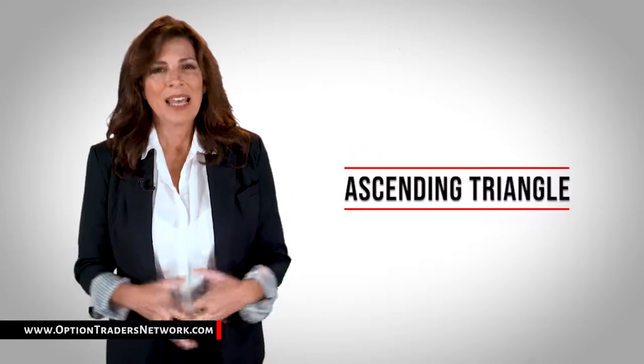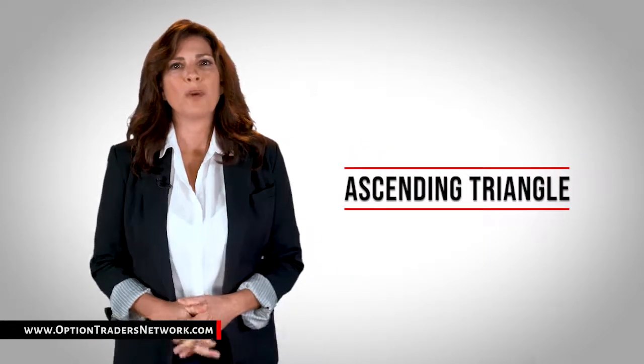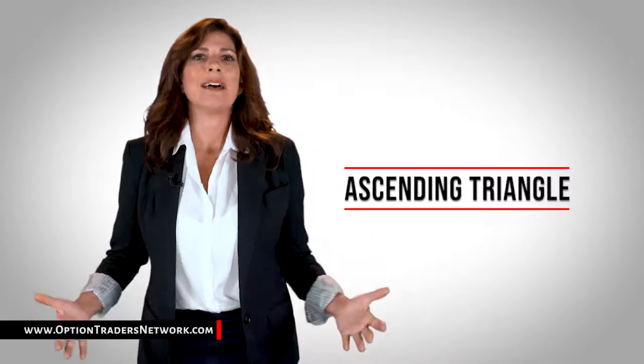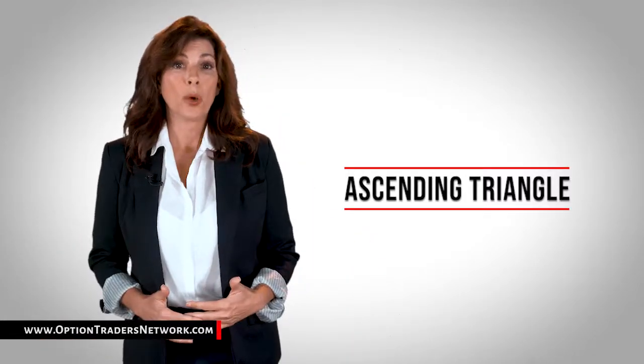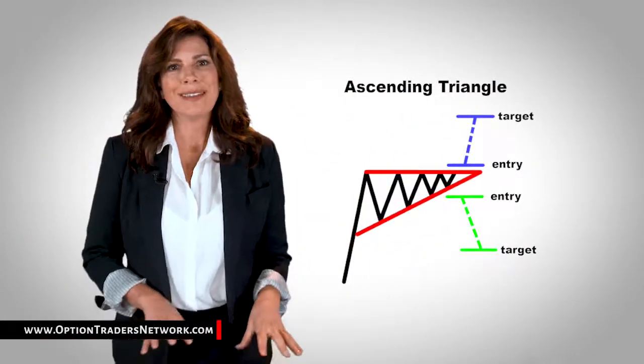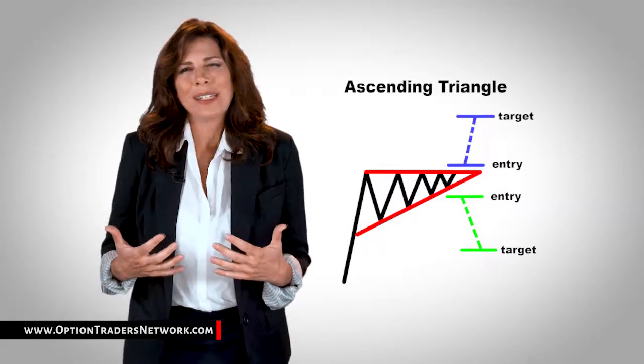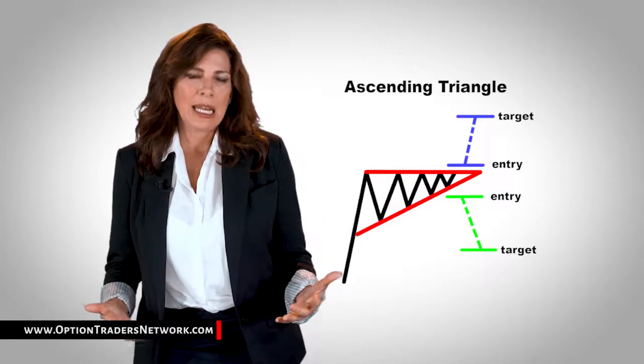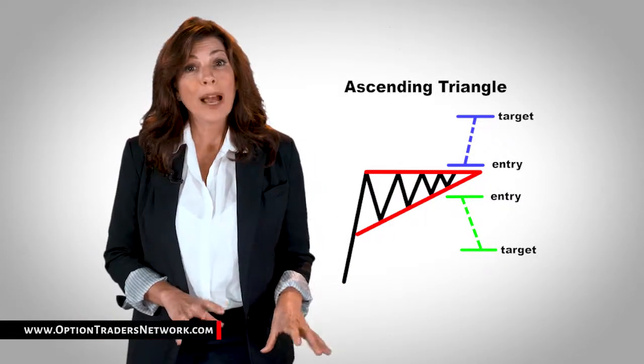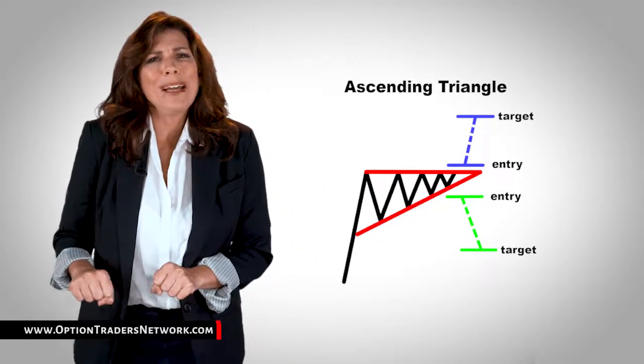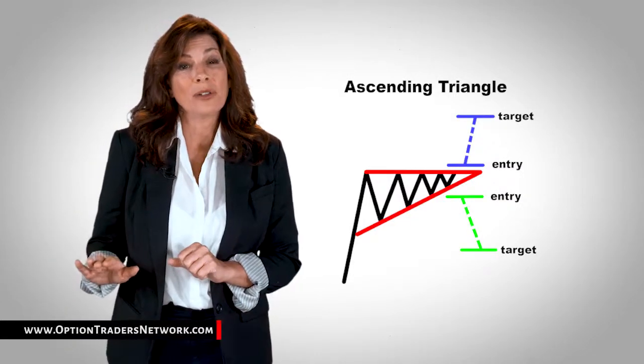Ascending triangle. This type of formation occurs when there is a resistance level and a slope of higher lows. What happens during this time is that there is a certain level that the buyers cannot seem to exceed. However, they are gradually starting to push the price up as evident by the higher lows.